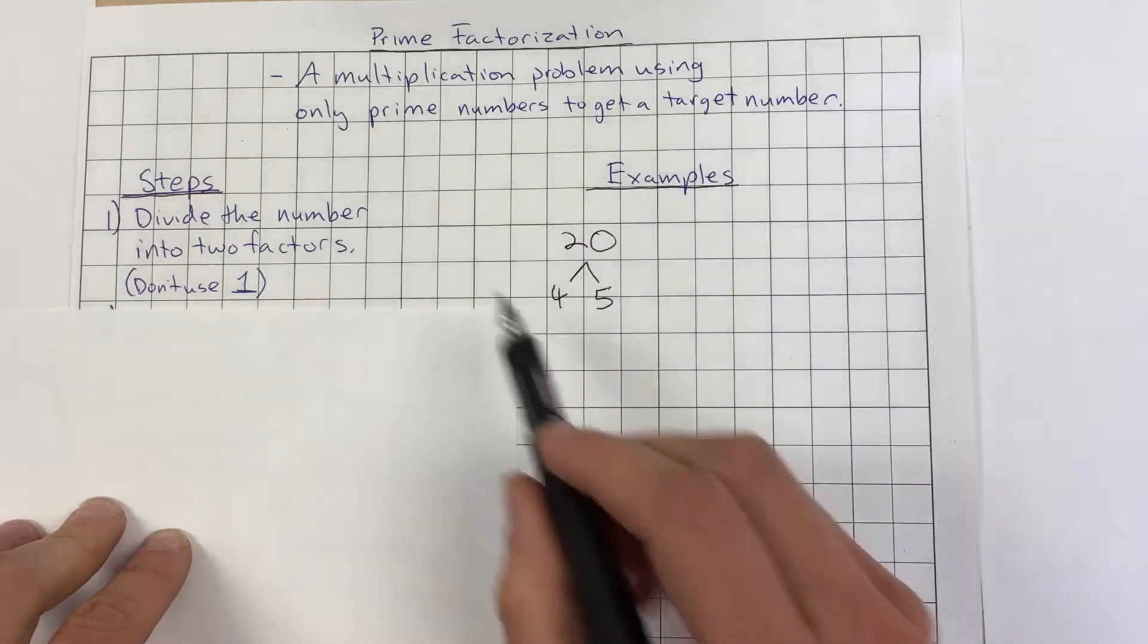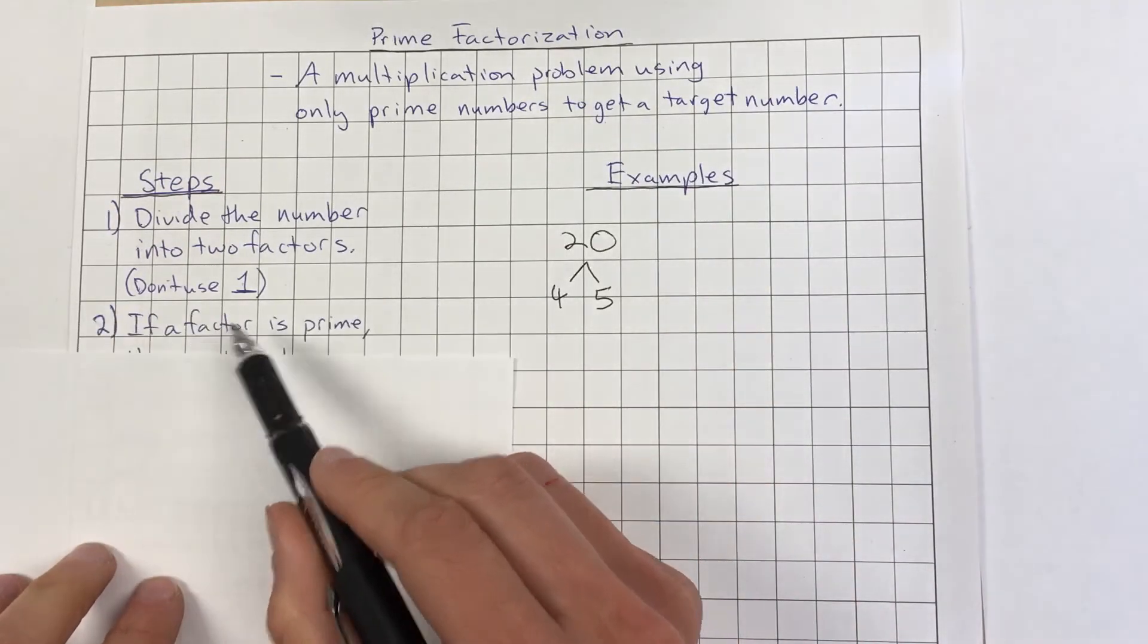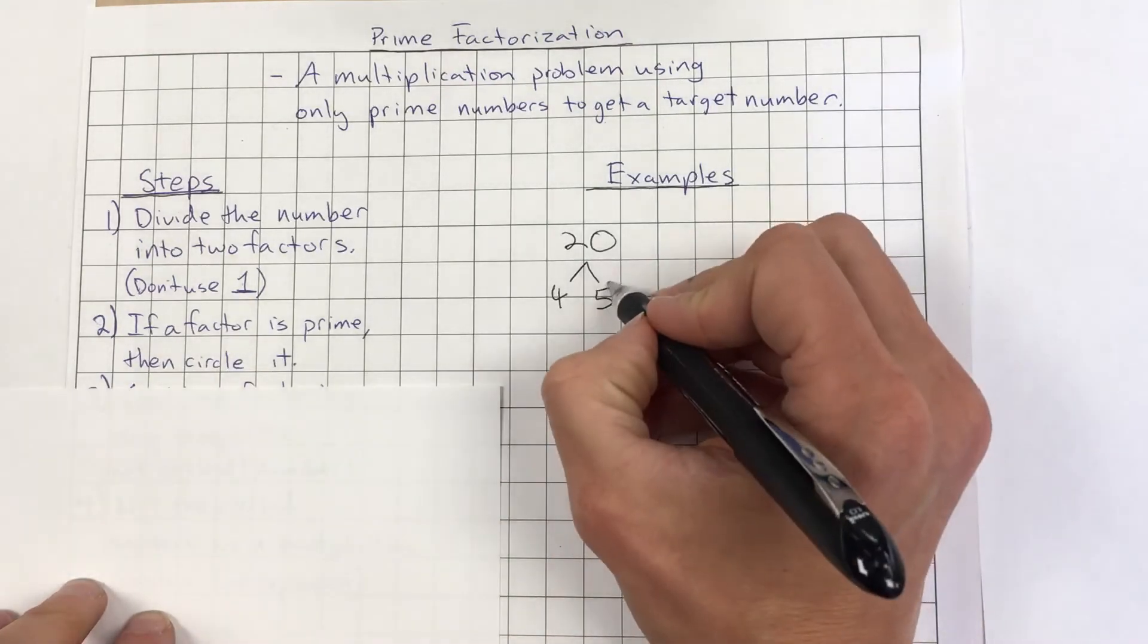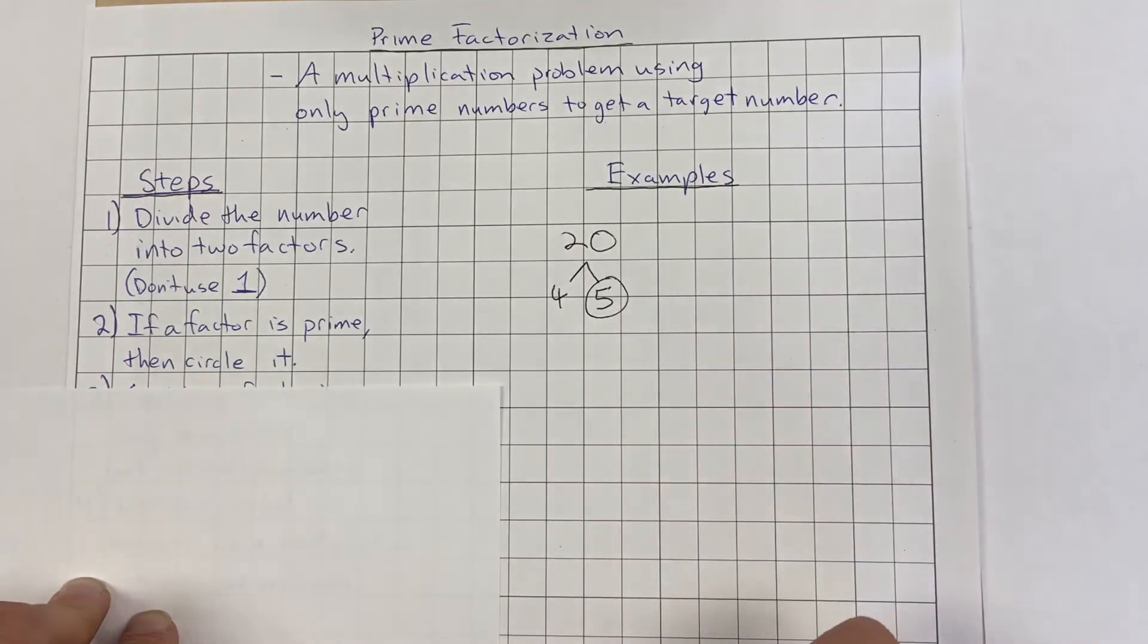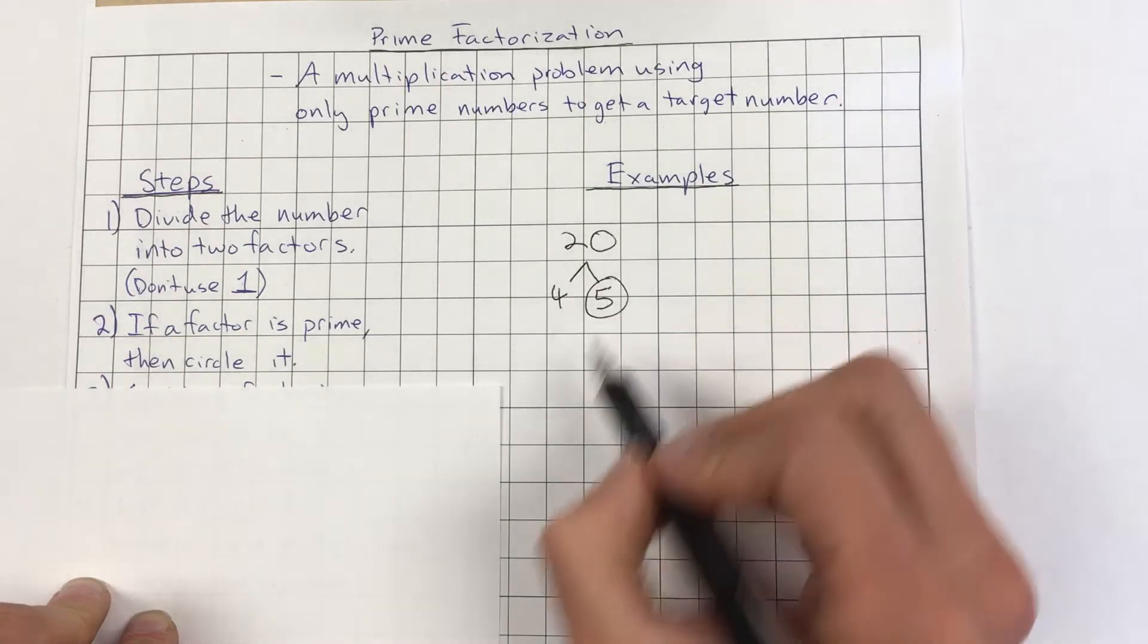We are not going to use 1, and I'll tell you why in a bit. But if a factor is prime, then we're going to circle it. This is my recommendation to circle it because we want to stop right there. That is a prime number: 2, 3, 5, 7, 11, and so on. So we're going to stop there.